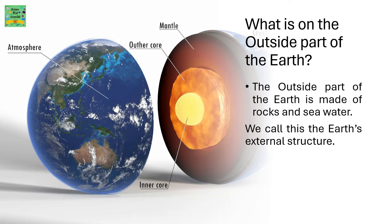What is on the outside of part of the Earth? The outside part of the Earth is made of rocks and seawater. We call this the Earth's external surface.